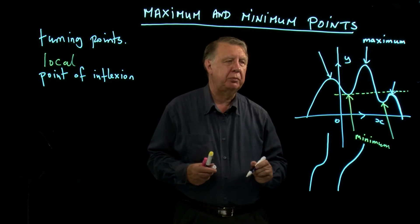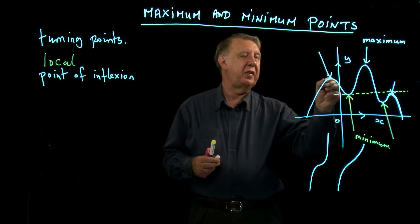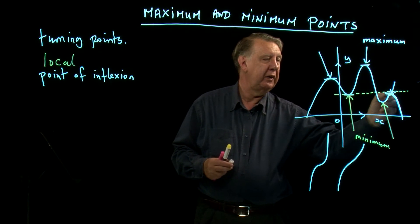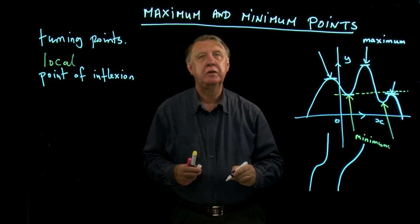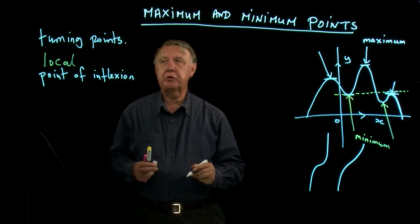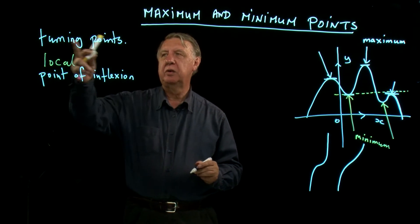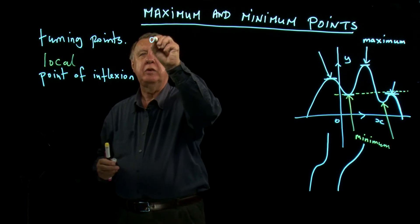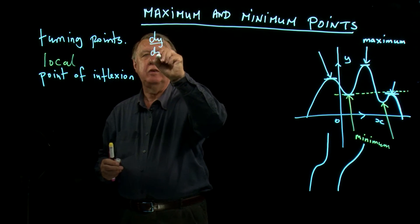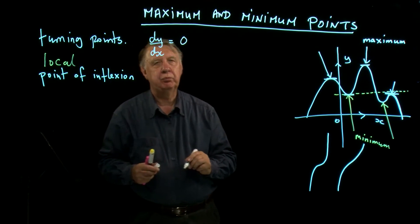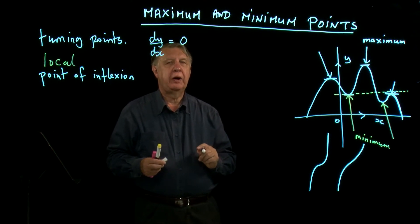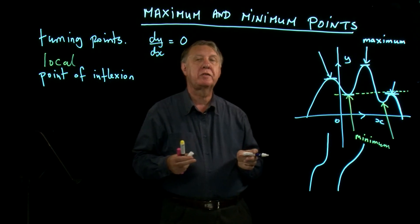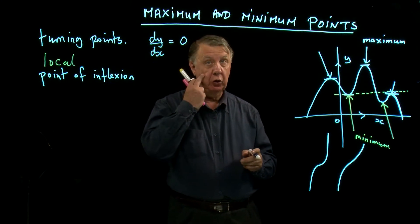What do those points have in common? Well, they're all flat at those points. All the graphs are flat—in other words, their gradient is zero. So the crucial thing about a turning point, ignoring the point of inflection, at a local turning point dy/dx is zero.